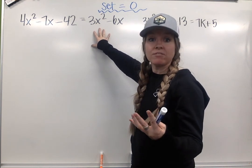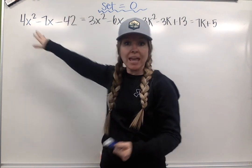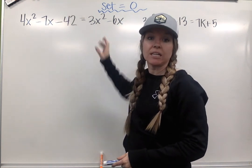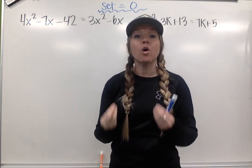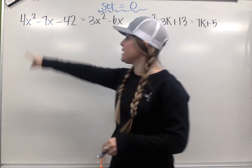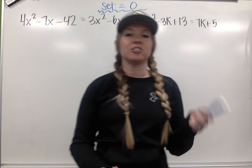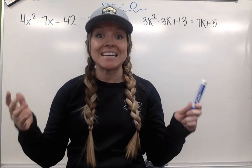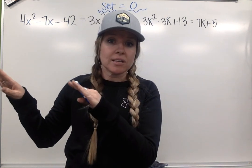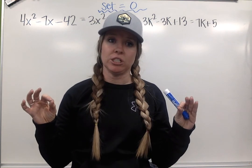What we have to do is combine our like terms and get this side of the equation to equal zero. Our goal is to always keep a positive x² because that's going to make our factoring easier. If you end up with a negative x², just move everything to the other side. It makes your life so much easier.